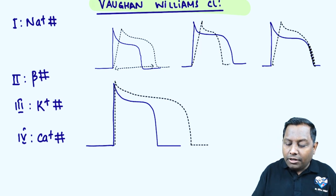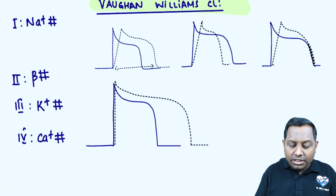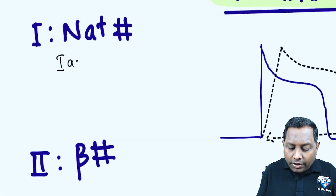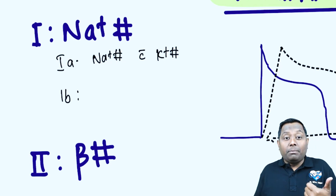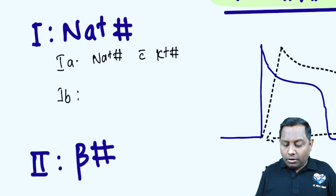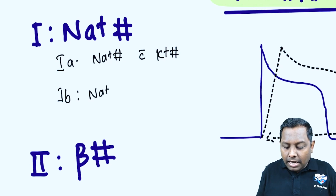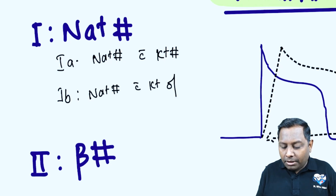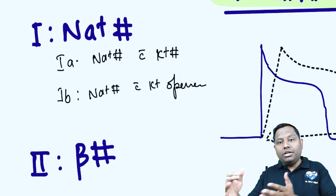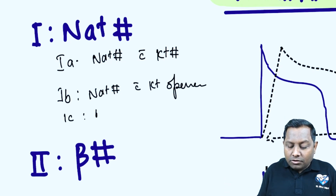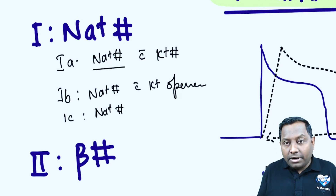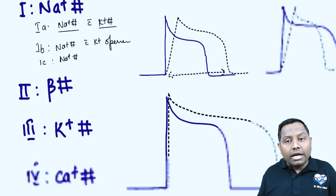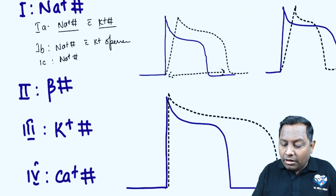Class 1 is further subdivided into 1a, 1b, and 1c. Class 1a has sodium channel blocking property plus potassium channel blocking property. Class 1b has sodium channel blocking property plus potassium channel opening property, so potassium rapidly goes out. Class 1c has only sodium channel blocking property with no action on potassium channels.